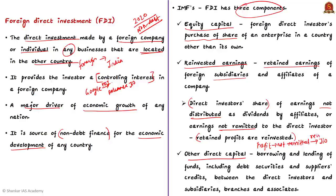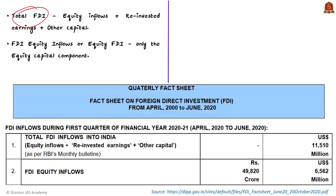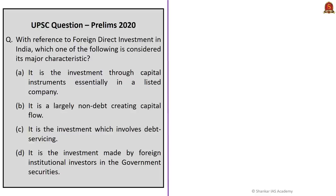Other capital covers the borrowing and lending of funds, including debt securities, between direct investors and subsidiaries, branches, and associates. For example, if Google extends capital or credit to its Indian subsidiary Google India, that is other capital. So the government provides FDI data in two types: total FDI, which covers all three components — equity inflows, reinvested earnings, and other capital — and FDI equity inflows, which includes only the equity capital component. The equity component in FDI has quadrupled in the recent period.